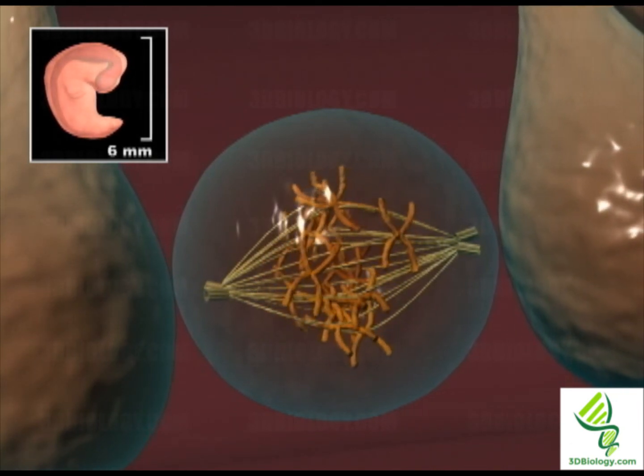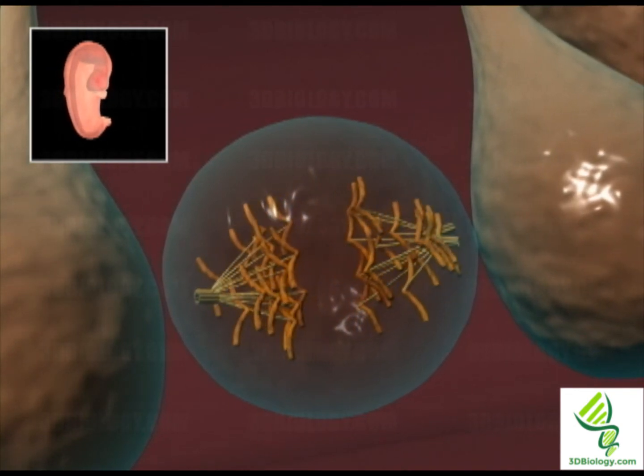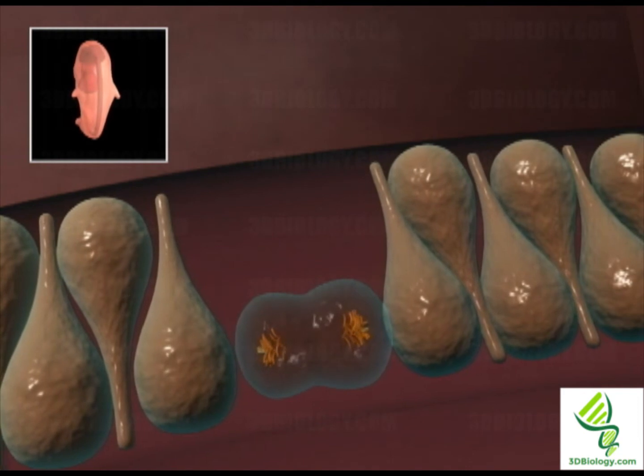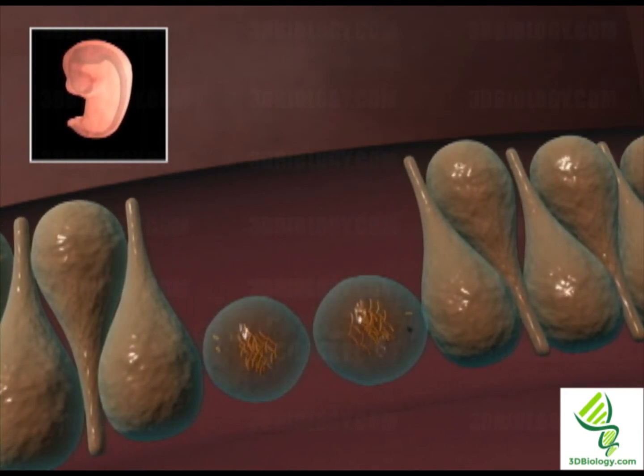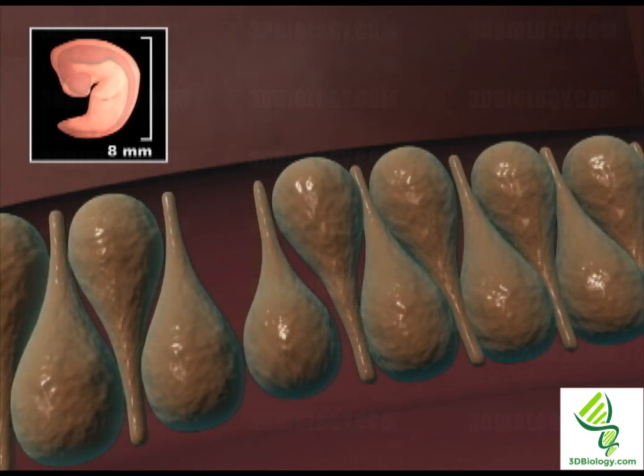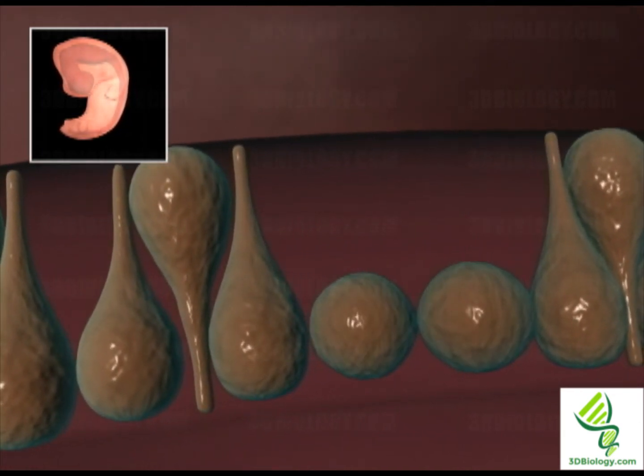In a mitotic division, the genetic material is doubled and distributed among two daughter cells. The process is repeated, resulting in growth of the diameter of the cerebral vesicle.